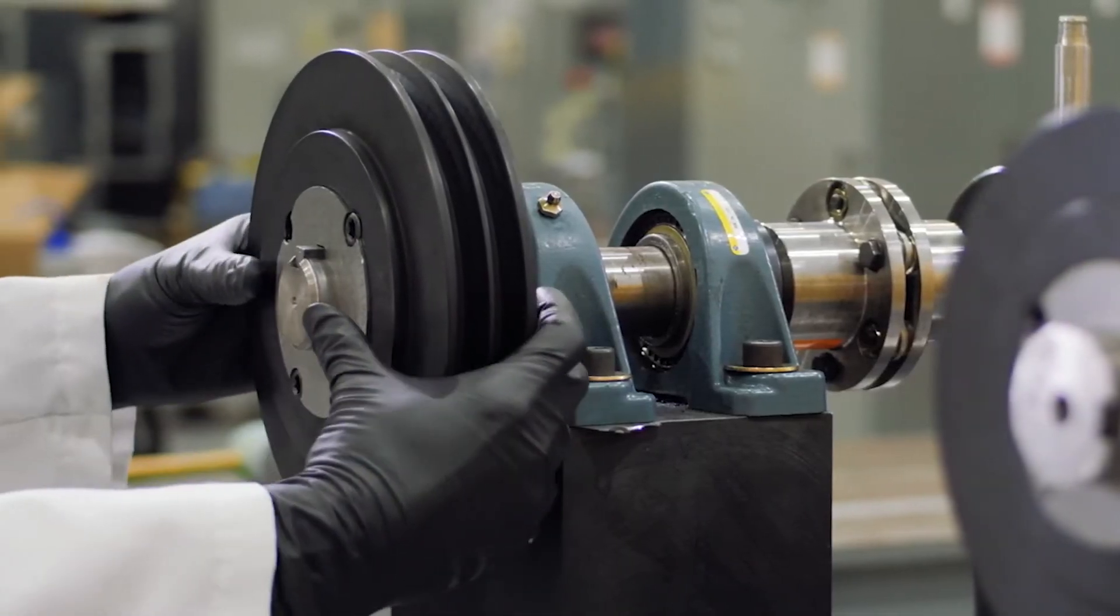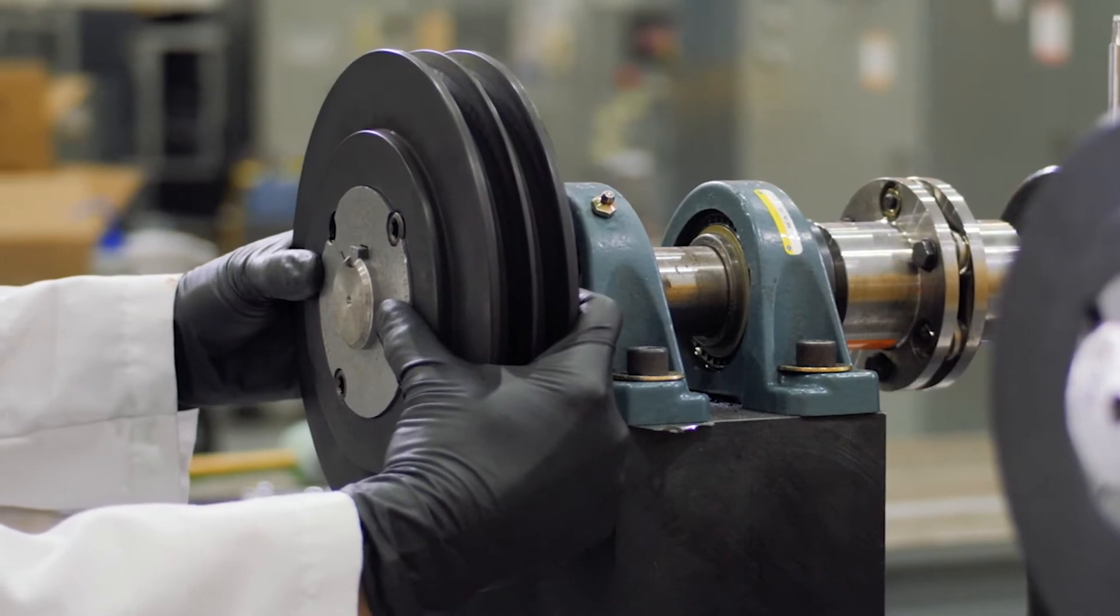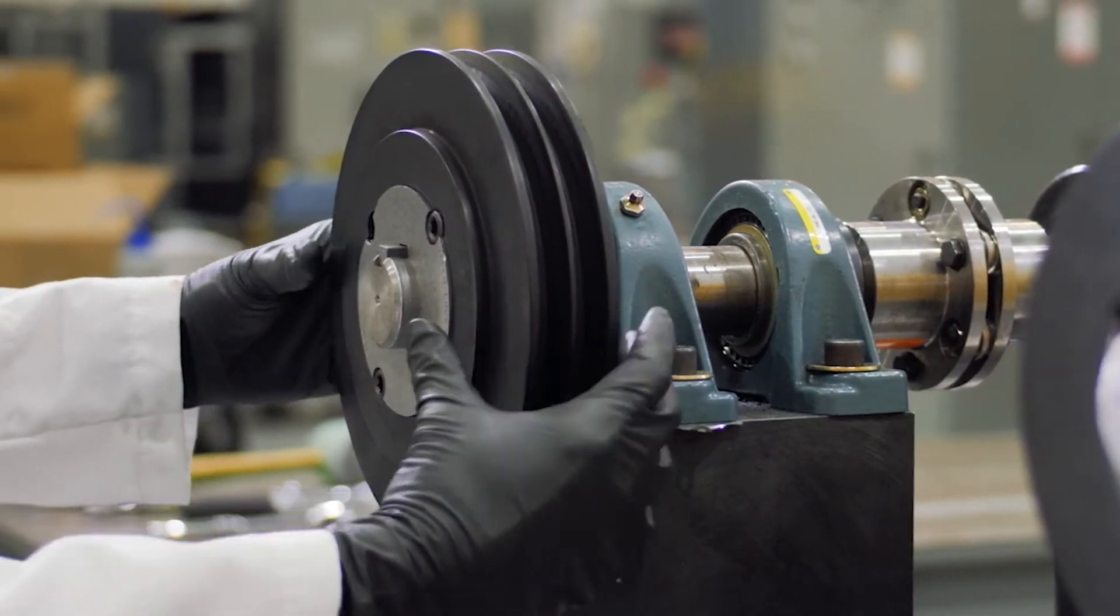Next, loosely install the other shiv and bushing so that its position can be adjusted axially on the shaft.